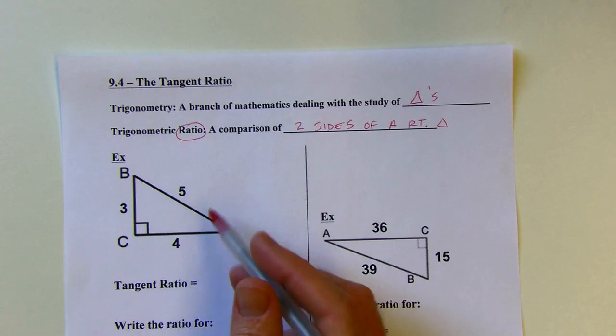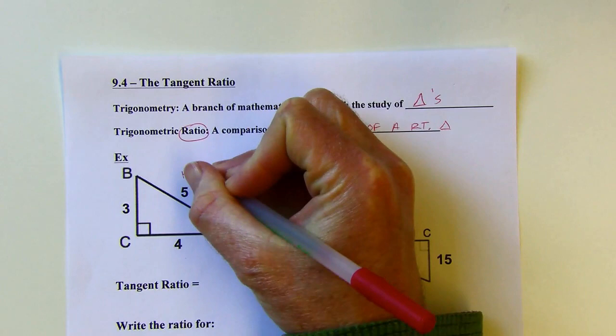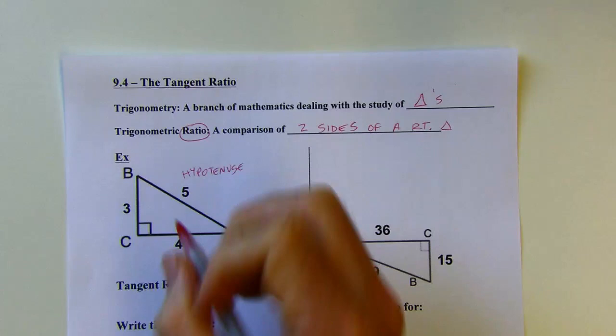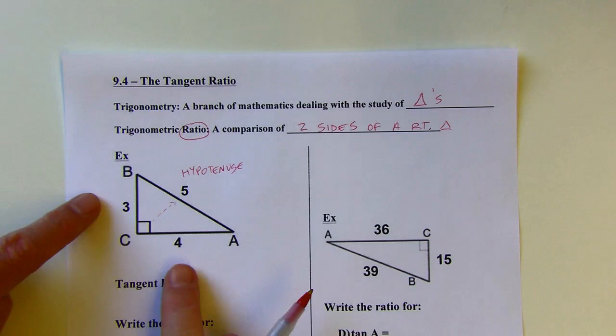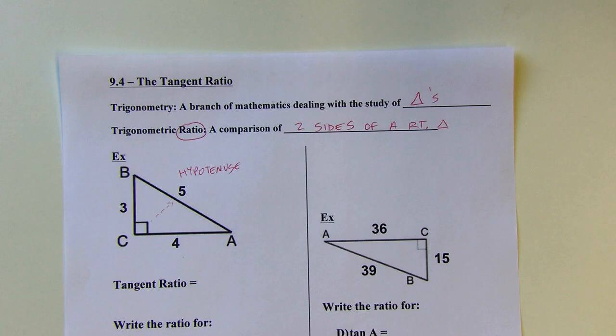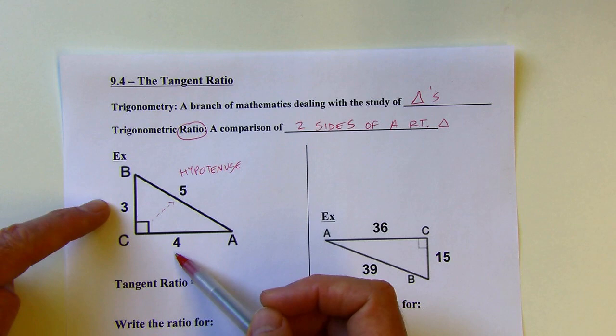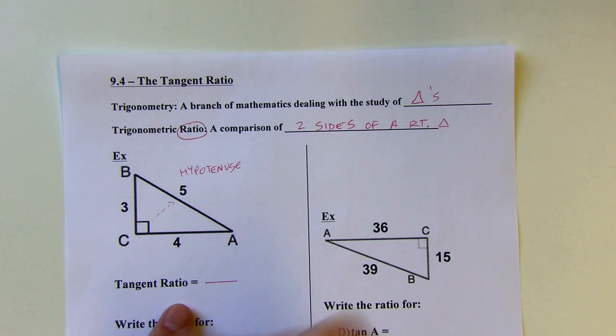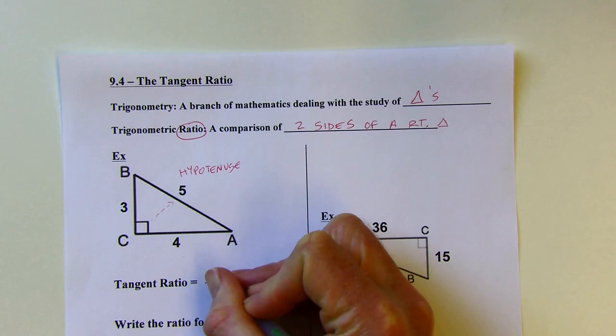We're going to talk about the tangent ratio, but first let's define these parts. In a right triangle, you've always got a hypotenuse — very important that you know which side is the hypotenuse. It's the longest side, and it's also opposite the right angle always. Then I've got two legs. When I'm talking about trigonometric ratios, the tangent is going to be a comparison of the two legs — the opposite leg over the adjacent leg.